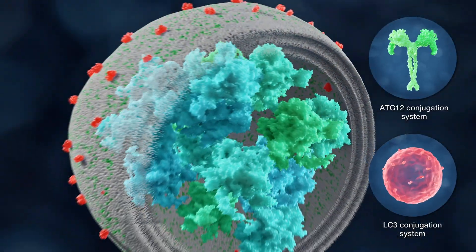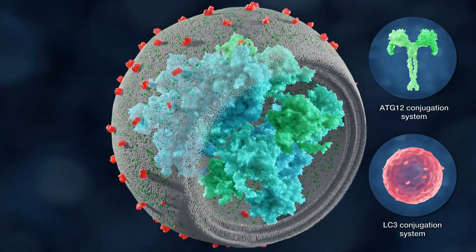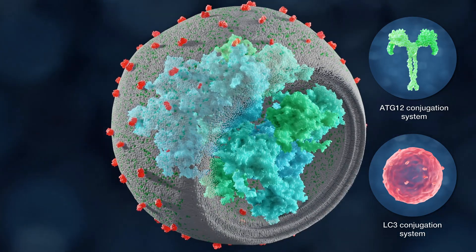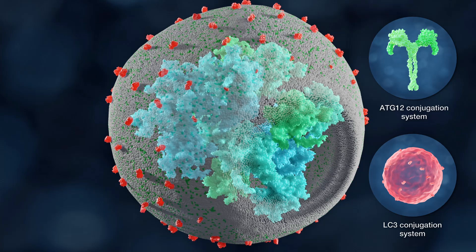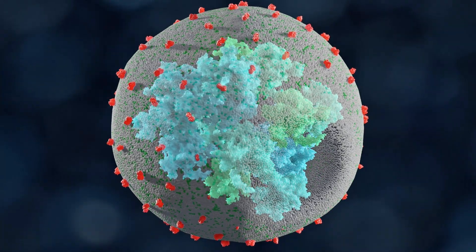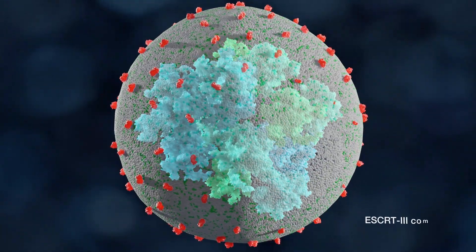The ATG12 and LC3 conjugation systems marginally participate in this process and are more crucial for the closure of the phagophore into an autophagosome and its subsequent transport and effusion. Phagophore closure appears to also require the Escort 3 complex.